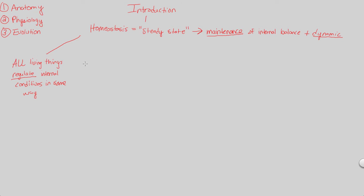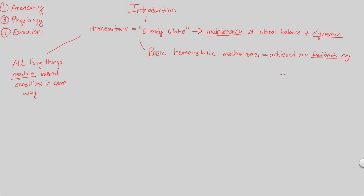Let's look at some examples of the steady state maintenance and dynamic homeostasis we've been mentioning, by looking at some basic homeostatic mechanisms. Whenever we talk about homeostatic mechanisms, we're dissecting something known as feedback regulation. In order to maintain homeostasis, it's going to be achieved via some sort of feedback regulation. Feedback regulation is how we're going to maintain homeostasis, maintain an internal balance, and regulate our internal conditions in some way.